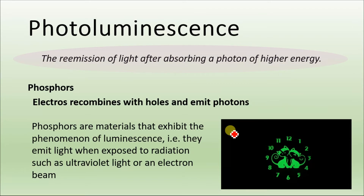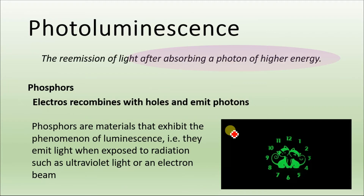The electron gains energy. When the electron loses some of its energy, it recombines with the hole. During this recombination process, photons are re-emitted. So photoluminescence is that type of luminescence in which electrons are excited by external photons.